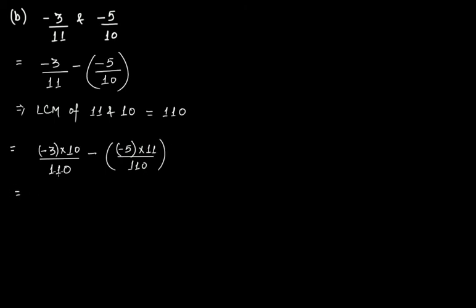Now if you solve this you get minus 30 over 110. This is minus, this becomes minus 55 over 110. Now if you open the bracket then this becomes minus 30 over 110, and minus outside the bracket, within the bracket is minus, so this becomes plus 55 over 110.